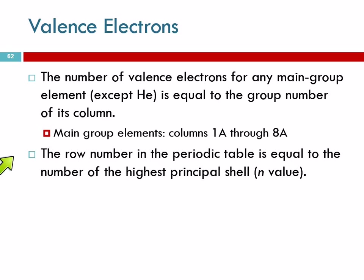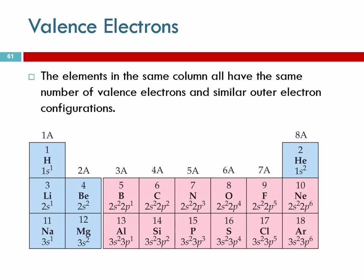The row number, which is the period number, tells us what is the highest occupied shell. For all of these elements, the highest occupied shell is 3, because this is the first period, and the second period, and the third period.